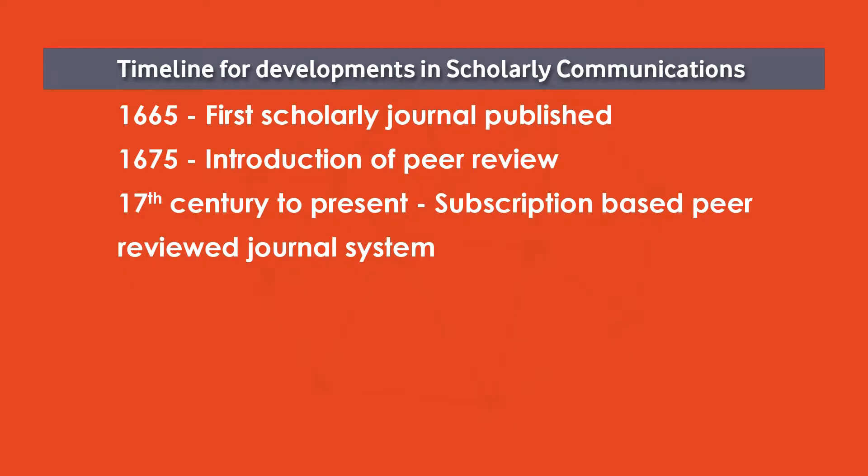Let us see some historical issues because most open knowledge objects contain journal papers — 91 to 92 percent of research is still published in journal papers. So first, take the history of journal publication in the world. If you look at the screen, the first scholarly journal was published in 1665. The first peer review process was introduced 10 years later in 1675, and right from the 17th century to today we follow the same model of subscription-based peer-reviewed journals.